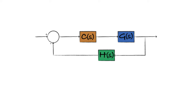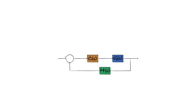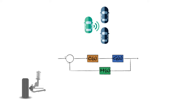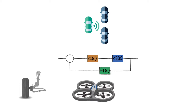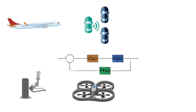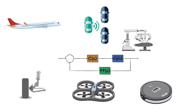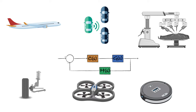Control systems are everywhere, from car suspensions to self-driving vehicles, from quadcopters to commercial airplanes, and from home vacuum robots to advanced surgical robots.